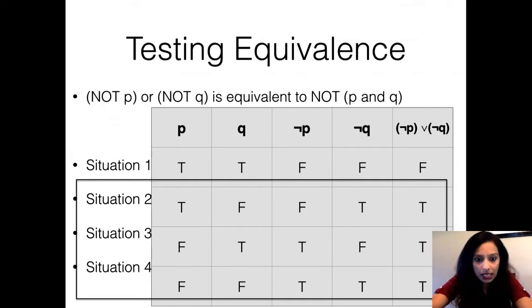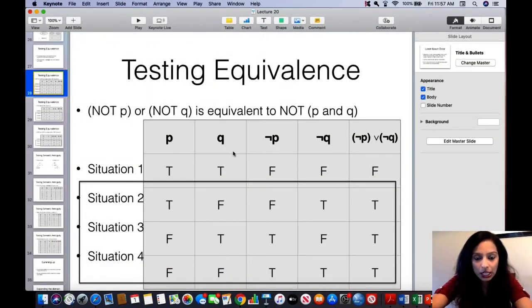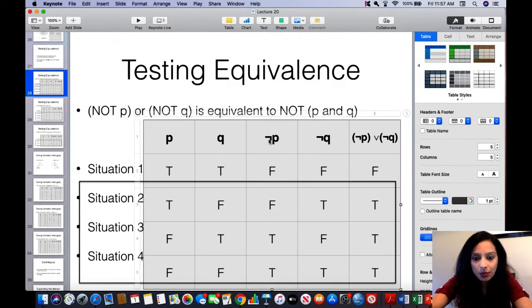So, you start with P: true-true, true-false, false-true, false-false, right, with both P and Q, and then you move on to negation of P, then negation of Q, and then negation of P or negation of Q.